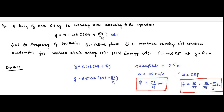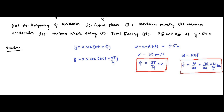Next, we find the maximum velocity. The maximum velocity in SHM is given by V_max = ωA, where ω is the angular frequency and A is the amplitude. Here ω = 100 rad/s and A = 0.5 meters.